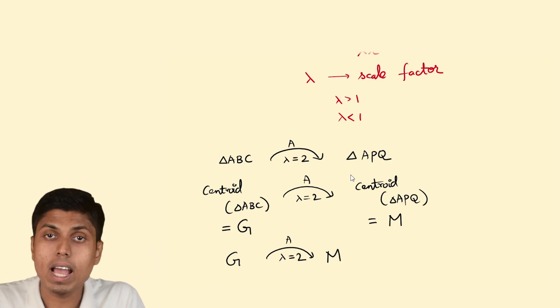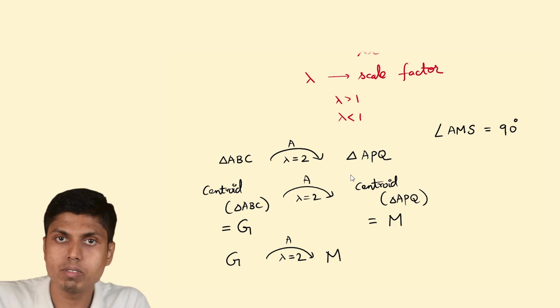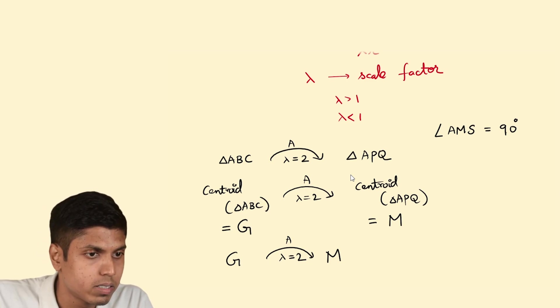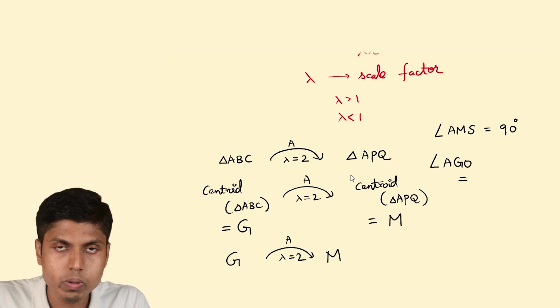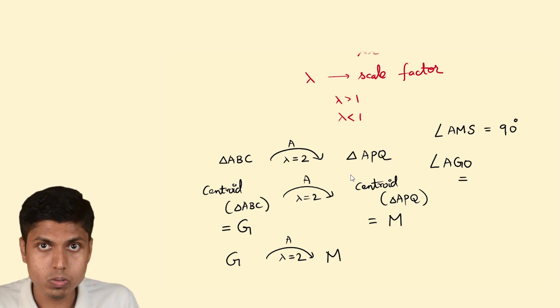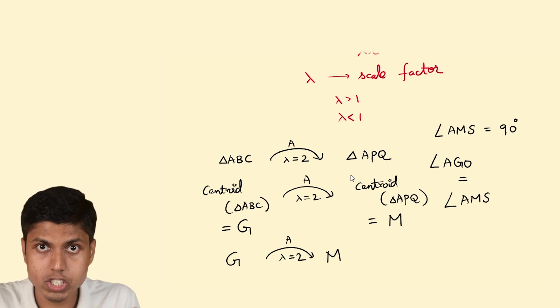We know angles are preserved in homothety, so angle AMS, which we know was 90 degrees, angle AGO would be equal to its transformed counterpart after the homothety. I know upon transformation G goes to M and O goes to S, thus AGO equals AMS, so AGO is 90 degrees.